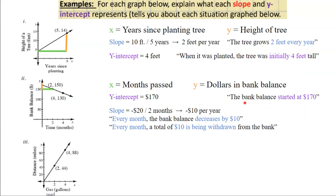When explaining the slope, remember that it is negative, so the bank balance is actually losing money. For this, we can say something like every month the bank balance is decreasing by $10, or every month a total of $10 is being withdrawn from the bank.